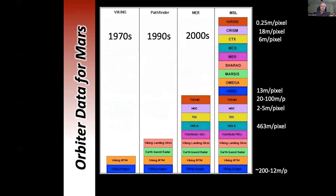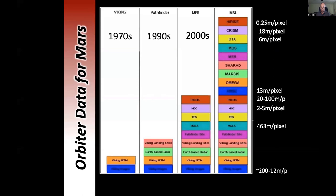The good thing about collecting data from orbit is that over time we've sent more and more spacecraft, thereby getting more and more data. Back in the seventies with the Viking orbiter we had some visible imagery and a little thermal data — enough to tell sand from rocks. Now we have all that older data plus newer data, all the way down to 25 centimeters per pixel satellite imagery. We've essentially sent the equivalent of a spy satellite to Mars. We can see laptop-sized objects on Mars. The whole planet has been mapped down to about six meters per pixel — house-sized objects all over Mars.